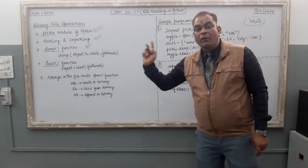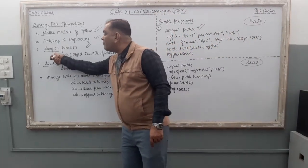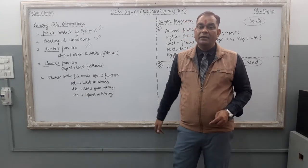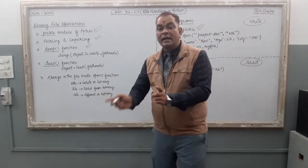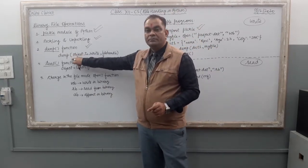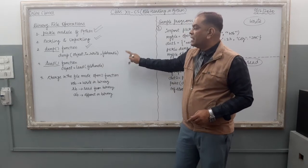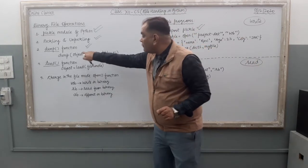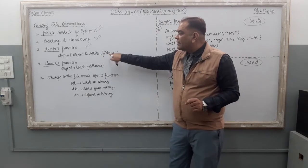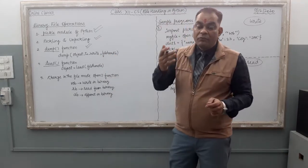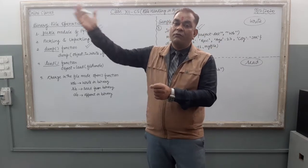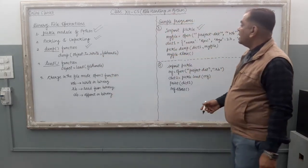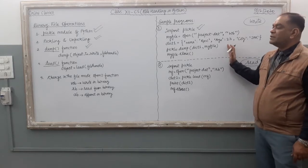What is the role of the dump function? The dump function is related with the writing process — if you want to write your program data into a binary file, you use dump. The syntax is: pickle.dump(object_to_write, file_handle). The object is what you want to write inside the file, and the file handle is the file object by which your file is connected.